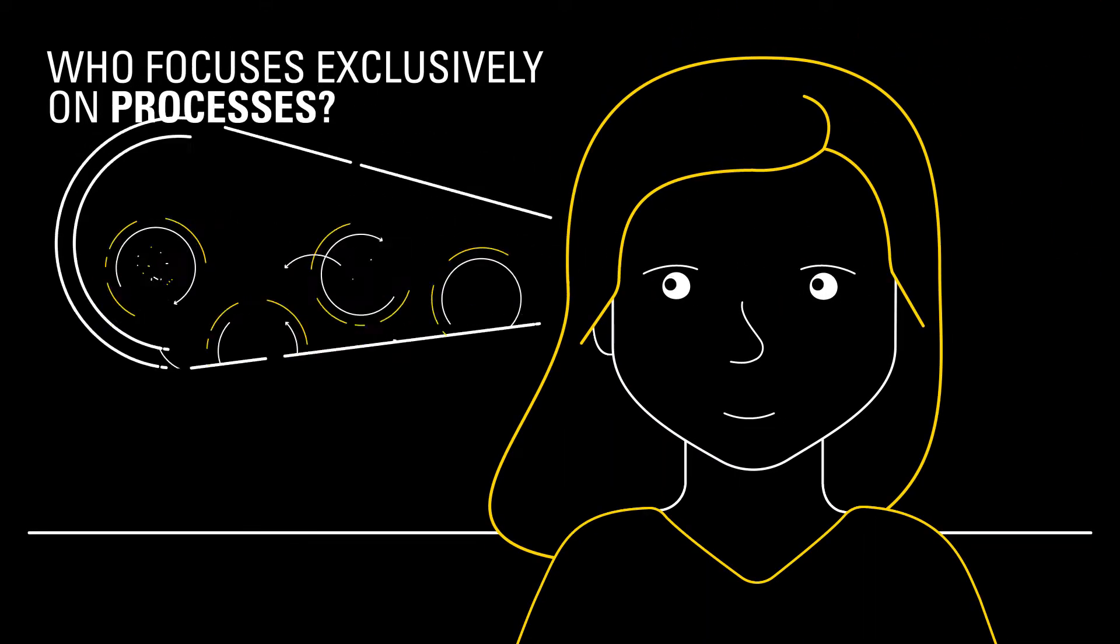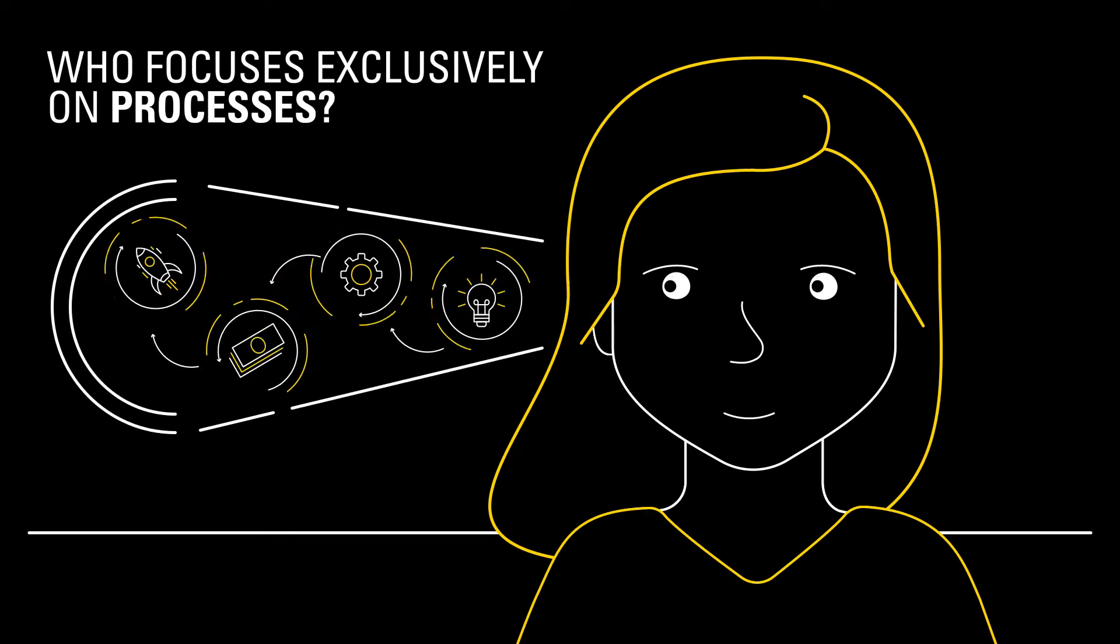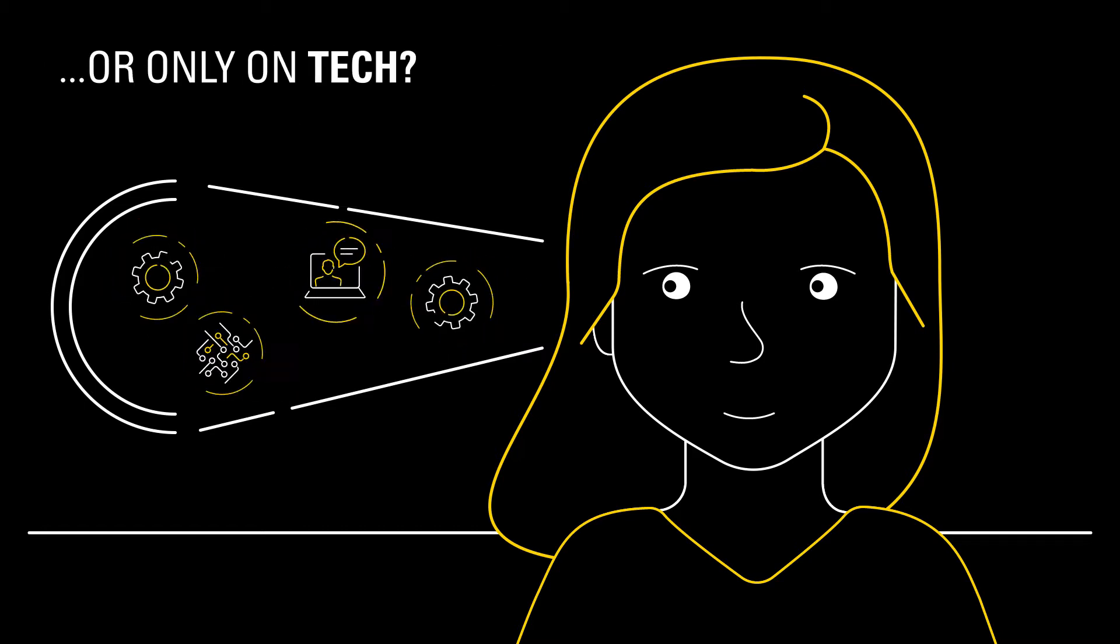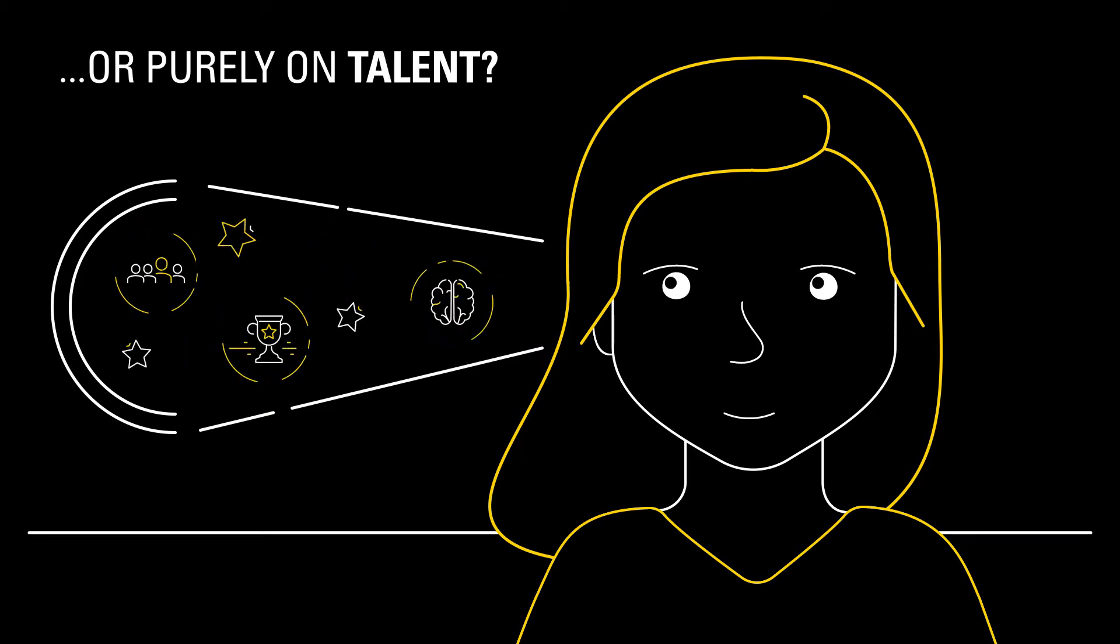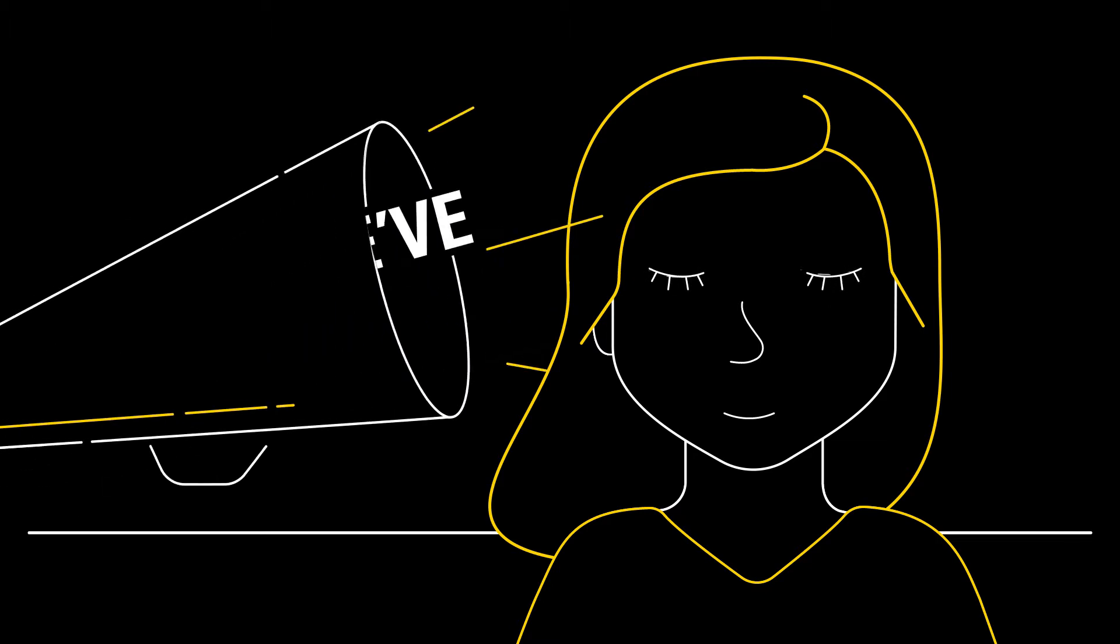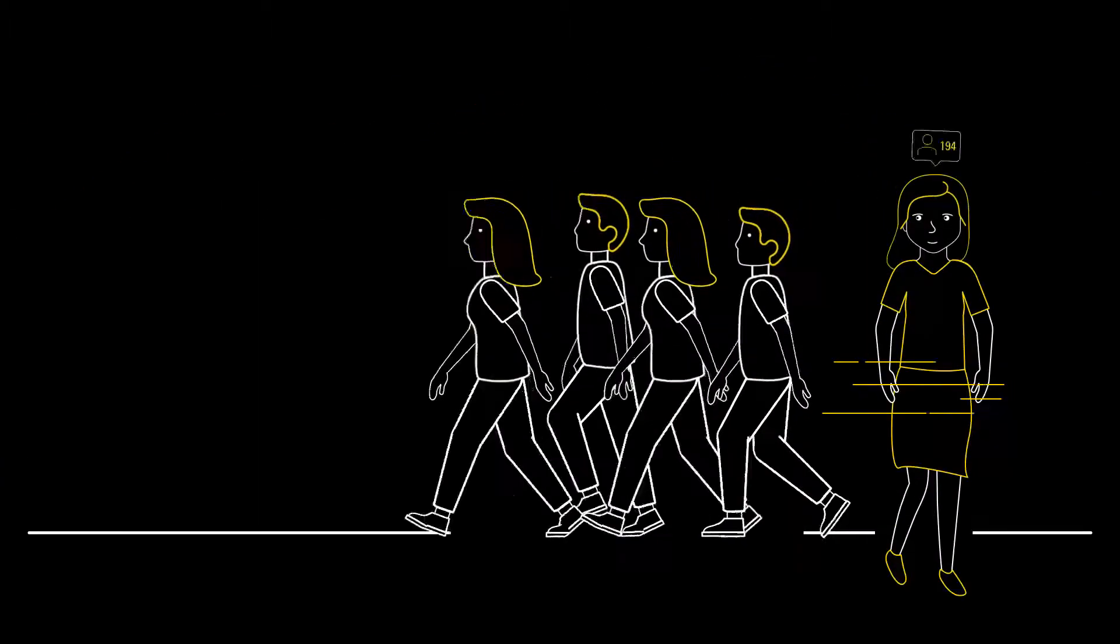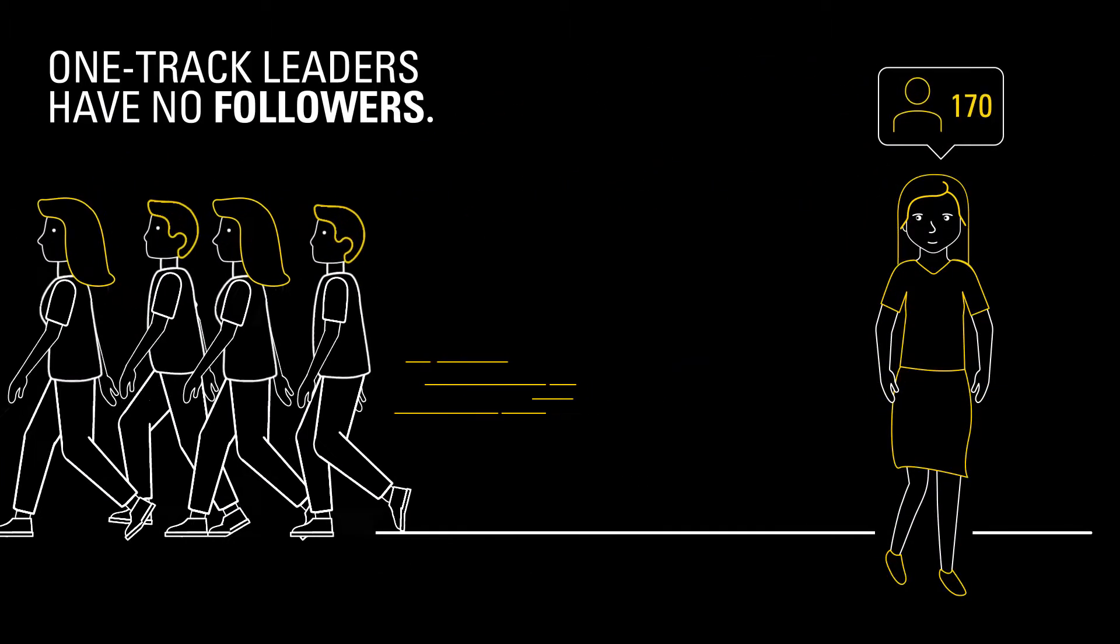Want to be a corporate leader who focuses exclusively on processes? Or only on tech? Or purely on talent? We've got news for you. One-track leaders have no followers.